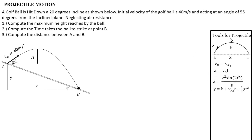The next formula: Y is equal to H plus the initial vertical component of velocity multiplied by T, less one-half G T squared. The difference between Y and H: this formula is used when there is a difference in elevation between A and C. In our problem, the initial location A is not level with point B, meaning there is a difference in elevation at the final location, so this formula is applicable.